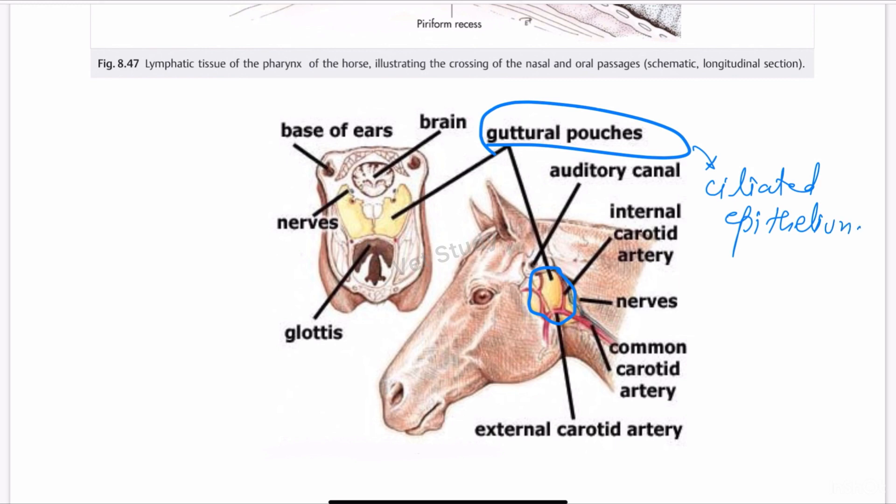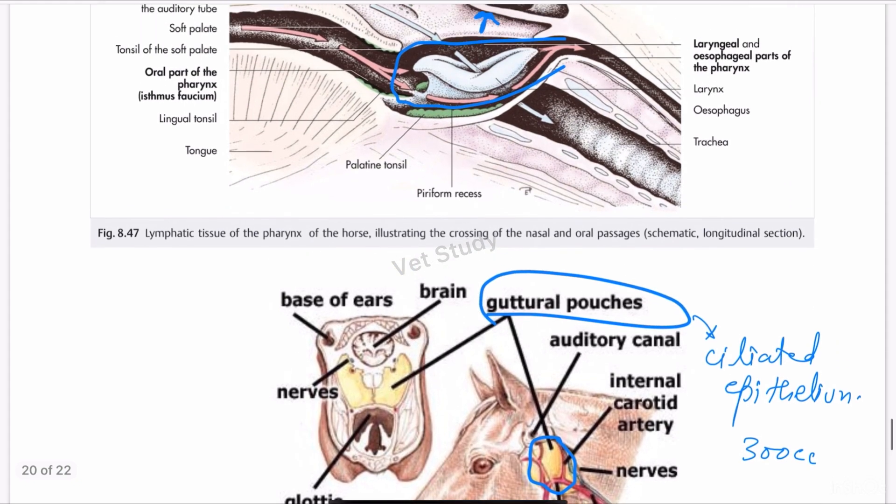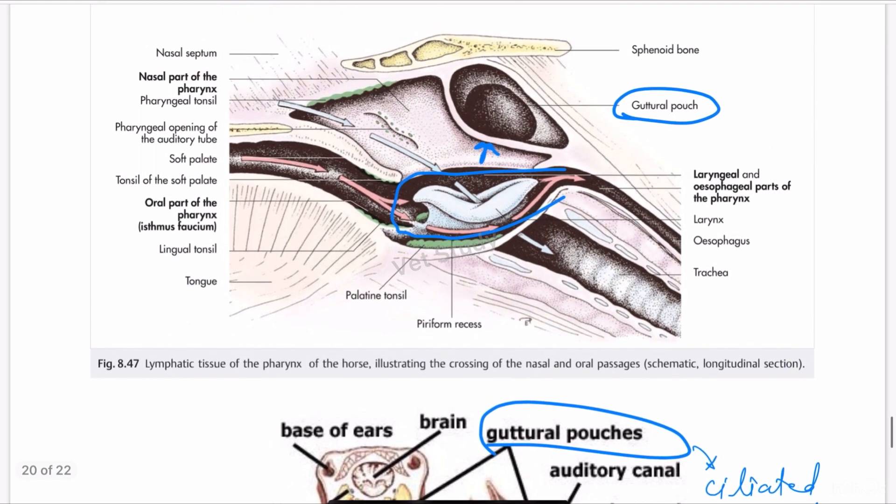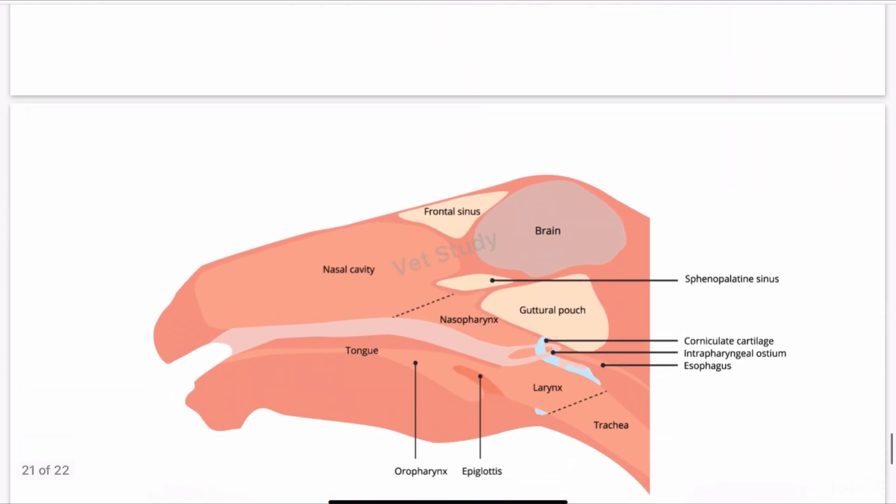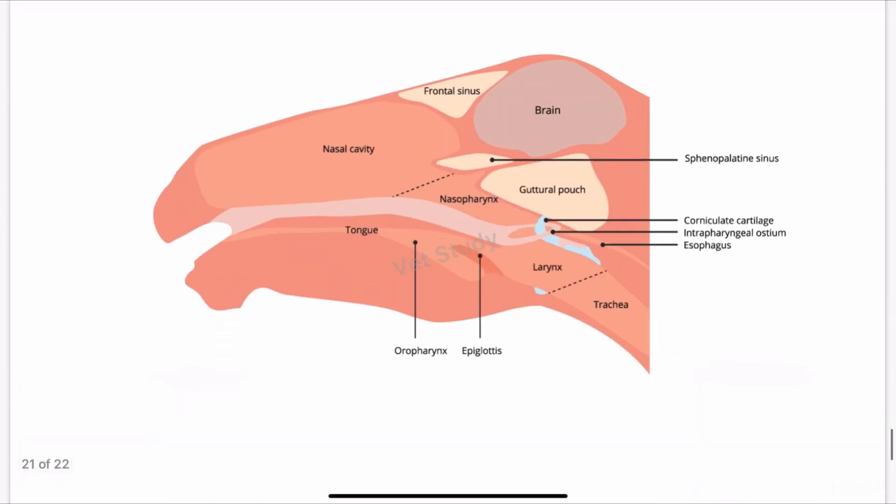It has a capacity of 300cc. This information about the guttural pouch is important to remember, especially for the pathology portion. You can also appreciate the guttural pouch in this image. Above the guttural pouch we have the brain, and cranially to the brain we have the frontal sinus, the nasal cavity, and the sphenopalatine sinus.